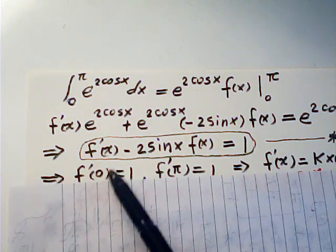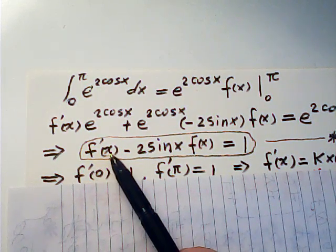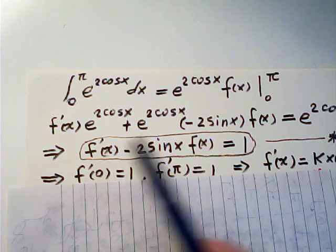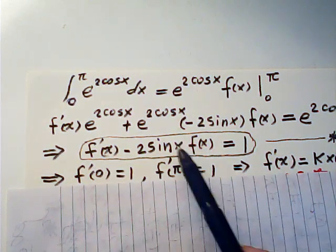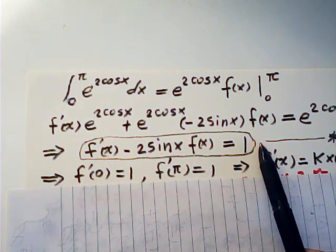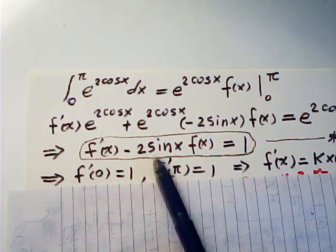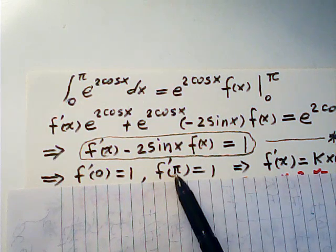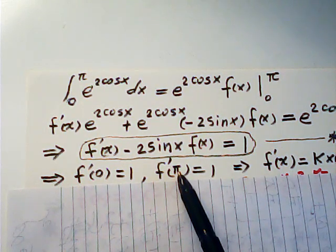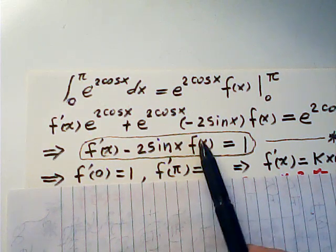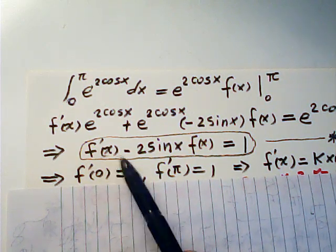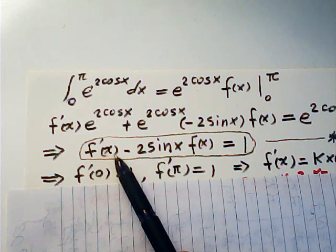If we plug zero for x, then f prime of zero is equal to one because this is zero, right? Sine zero is zero. If we put value for x equal to pi, this is zero. Then f prime of pi is one.